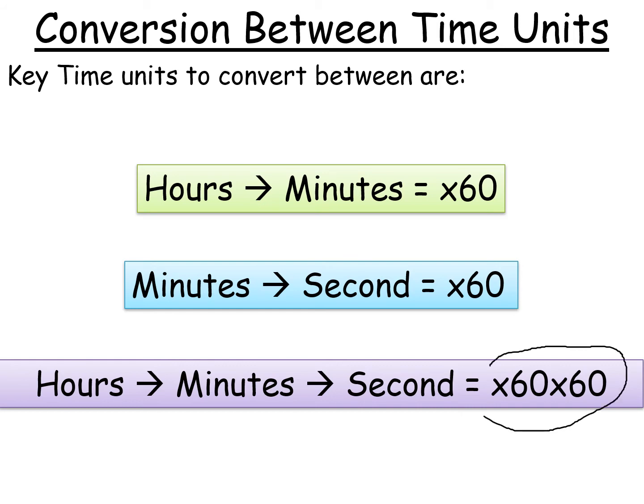People always get this wrong between either multiplying by 60 or dividing by 60. So here's my top tip. Always, there are more minutes than there are hours. If you think about it, one hour is 60 minutes. Same as seconds. There are more seconds than there are minutes. One minute is the same as 60 seconds. So there are always more seconds. So that's how I remember you have to multiply by 60.